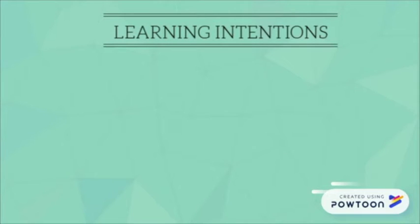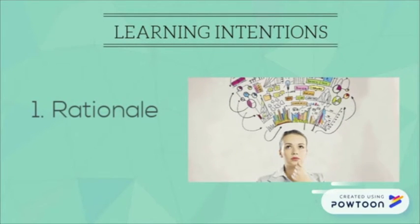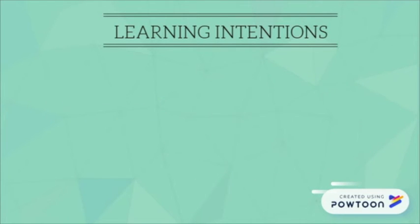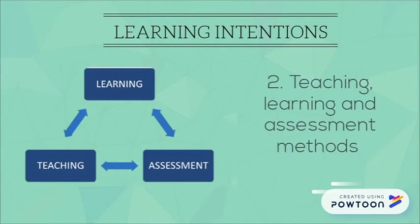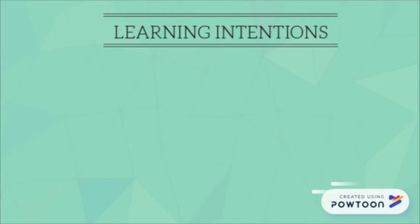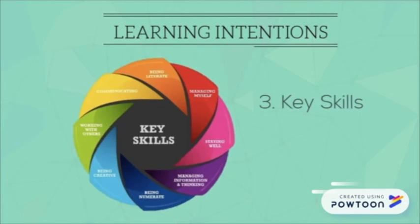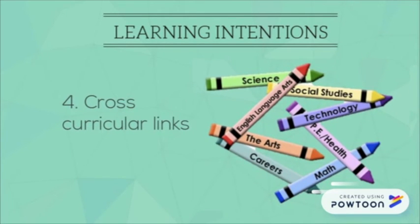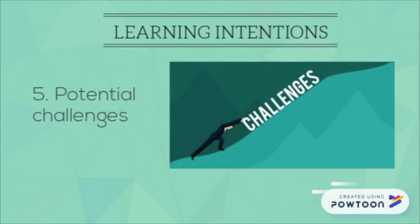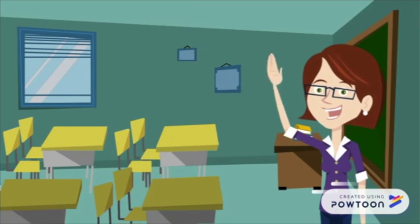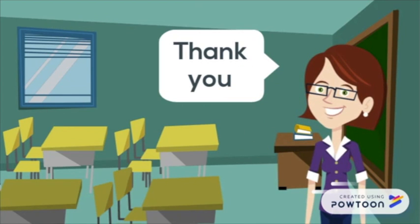In this presentation, our learning intentions were: the rationale as to why the topic of sustainable consumption was chosen and its significance for Junior Cycle students' learning across the curriculum; the range of active and creative teaching, learning and assessment methods and resources in relation to sustainable consumption; how key skills which underpin the Junior Cycle curriculum are incorporated in the topic; how to forge cross-curricular links and showcase a cross-curricular theme with other subject disciplines; and the potential challenges for post-primary students and teachers when working with the topic of sustainable consumption. Thank you for your time.